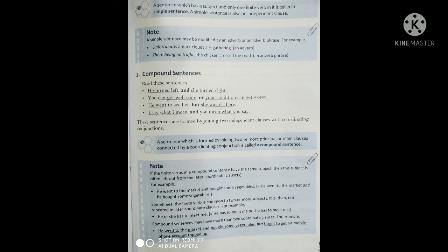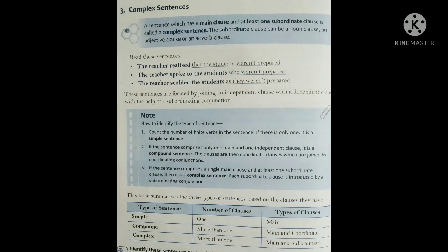Next हमारा है Compound Sentence. A sentence which is formed by joining two or more principal or main clauses, connected by a coordinating conjunction, is called a Compound Sentence. It is formed by joining two or more principal या main clauses, and those two clauses are joined by using coordinating conjunctions. कभी-कभी हमारे दोनों ही clause में same subject और same finite verb होता है, then we often leave one of the subjects and form it as a Compound Sentence। Compound Sentences में हमारे coordinating conjunctions use होते हैं।